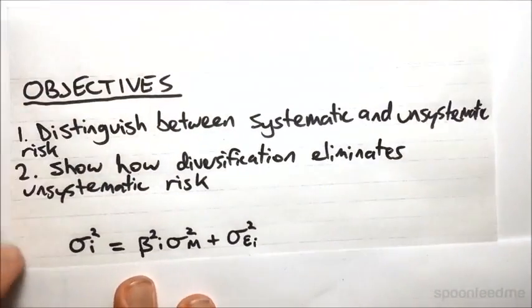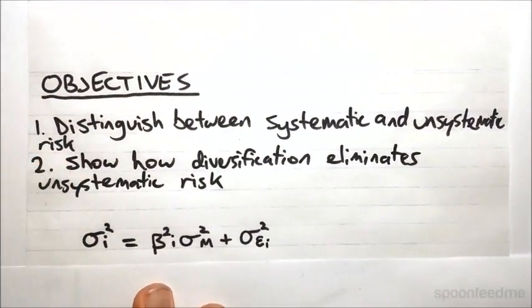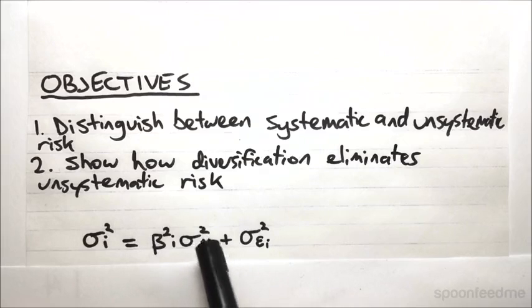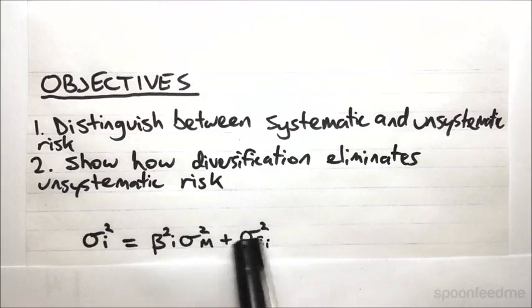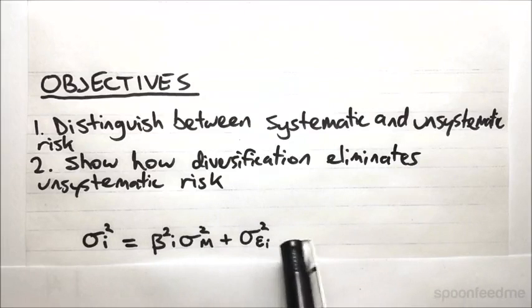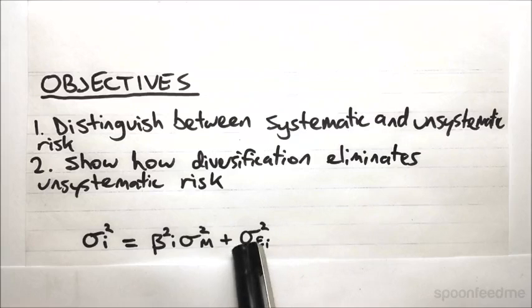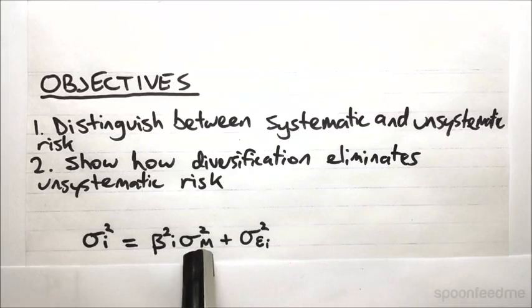We split up the variance of an asset into the following: we have the beta squared multiplied by the market variance, and then we have this variance over here. This is what we refer to as our unsystematic risk, whereas this is the systematic risk.